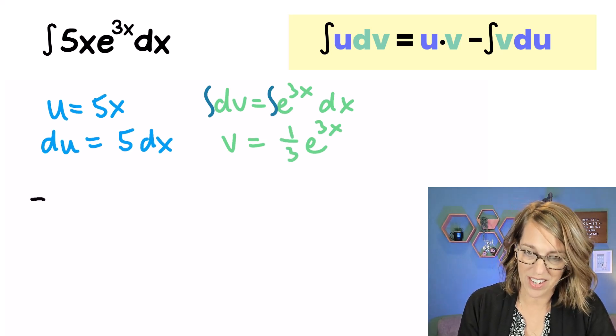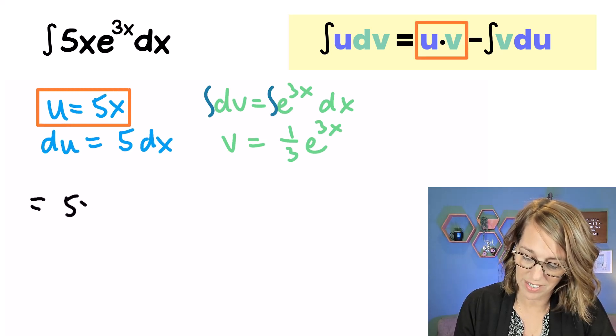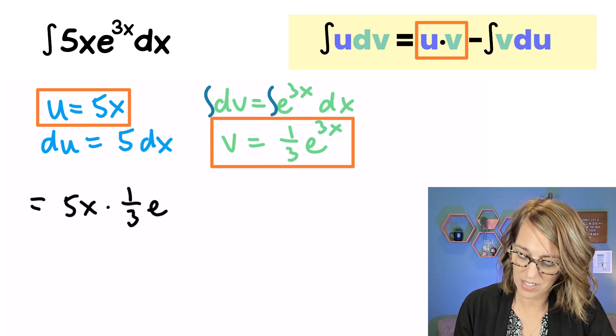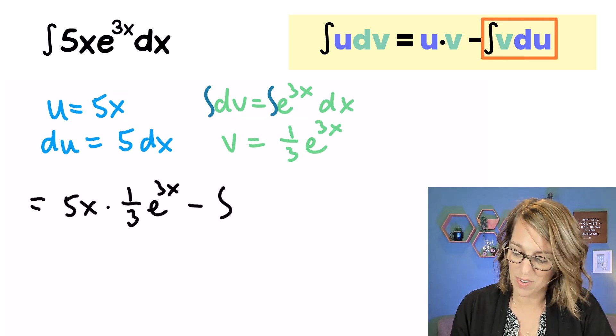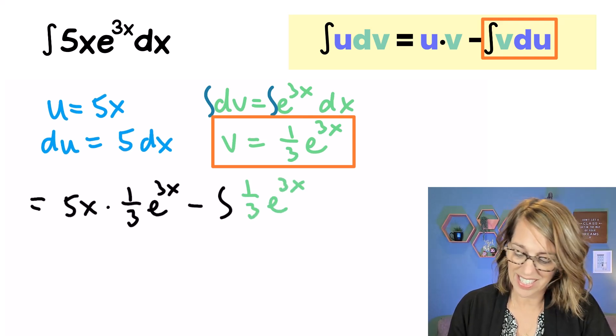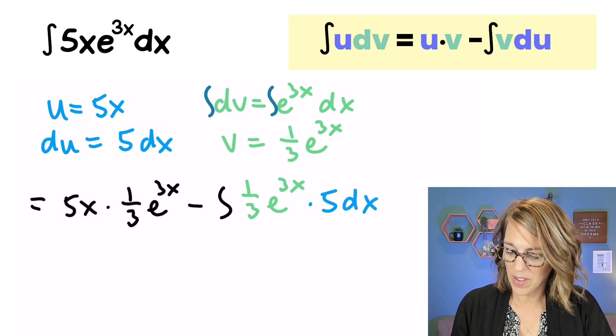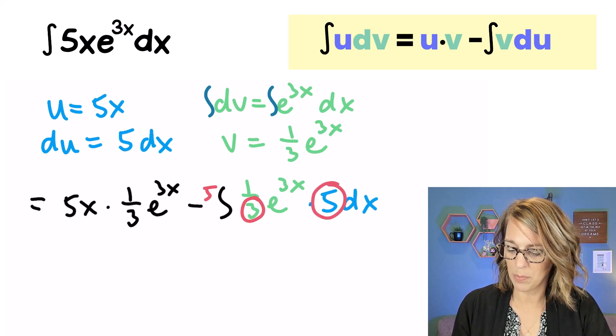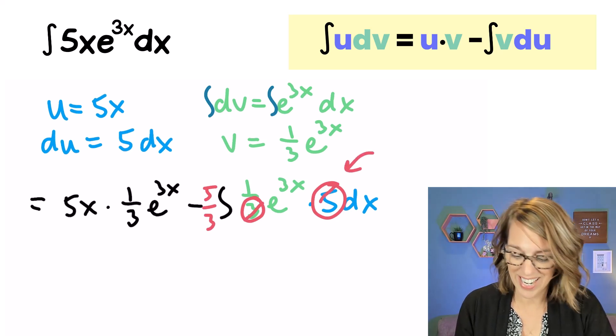So my integral then becomes u times v. u times v is going to be 5x times v, which is 1 third e to the 3x minus the integral of vdu. v is 1 third e to the 3x and du is 5dx. Now there's a little bit of simplifying that I can do. I'm going to take this 3 in the denominator and 5 in the numerator. Let's put this out in front as a 5 thirds so this is ready to integrate.